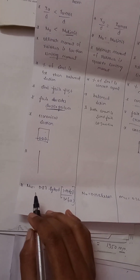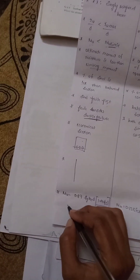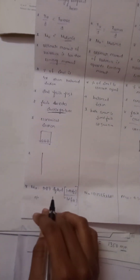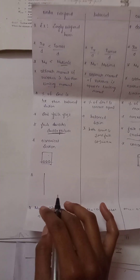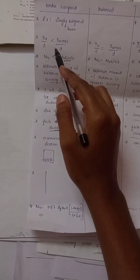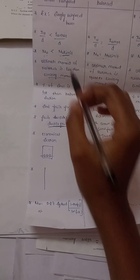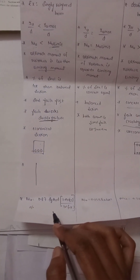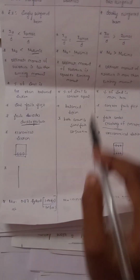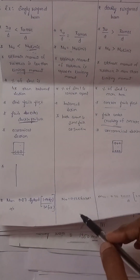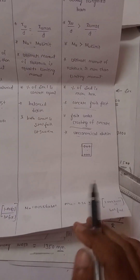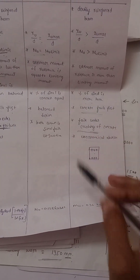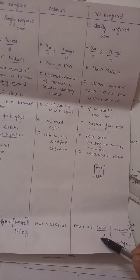The relevant code book page is 96. For calculations: when xu/d is less than xu_max/d the beam is singly reinforced; when xu/d equals xu_max/d it is balanced; when xu/d is greater than xu_max/d it is over-reinforced. These formulas and neutral axis depth values are referenced from the code book.